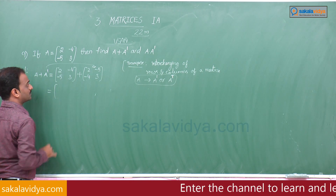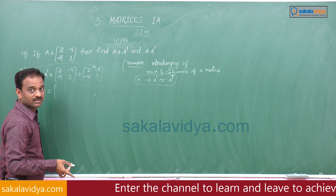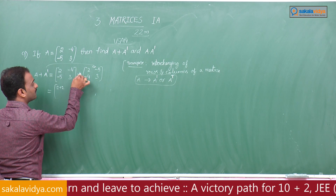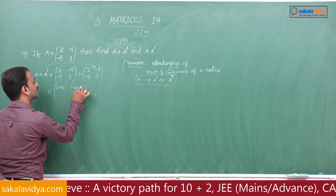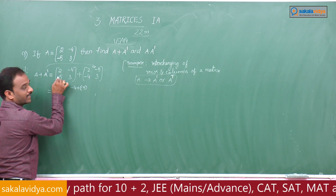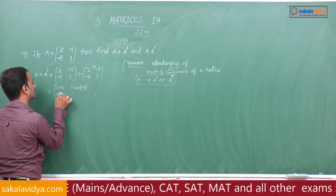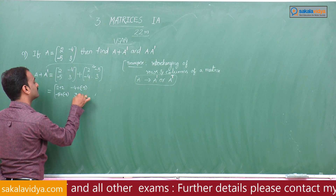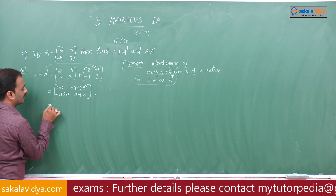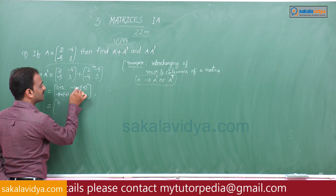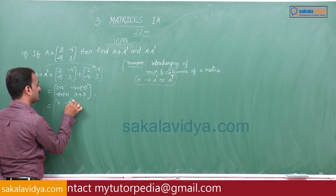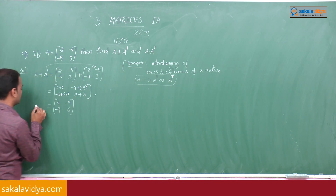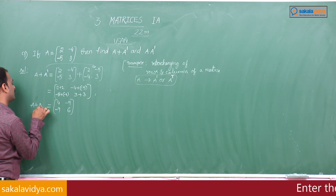Now the addition of these two matrices by adding corresponding elements: 2+2, -4+(-5), -5+(-4), 3+3, giving the result of A plus A transpose.